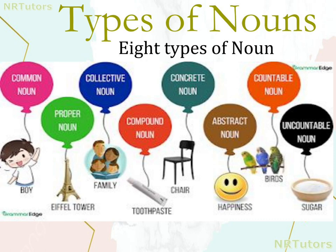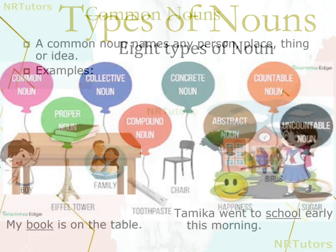So, let's discuss about the types of noun. There are total eight types of noun.